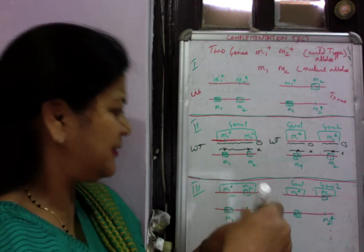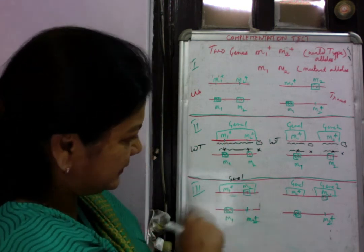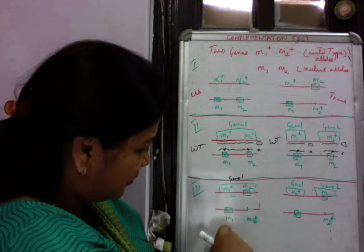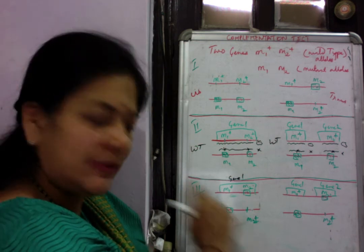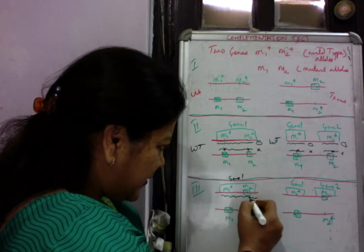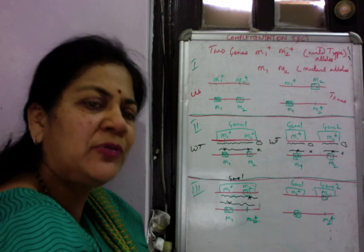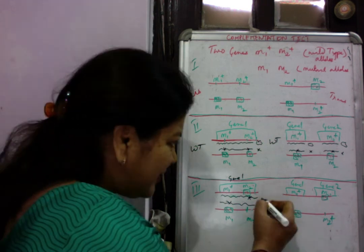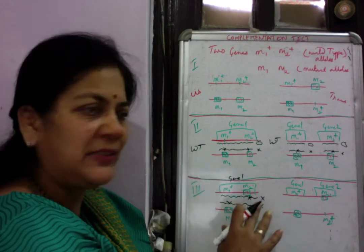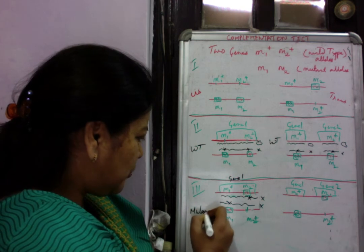Now consider the trans configuration. Gene one has a wild type allele at the m1 locus and a mutant allele at the m2 locus; the other homolog has a mutant at the first locus and a wild type at the second. The product at m1 is made normally because m1 is normal, however there is a mutation in the m2 region. Similarly, the other homolog has a mutation at m1. Both products have mutations in their respective loci, which may result in non-functional products for both loci, so in this condition we see a mutant phenotype.